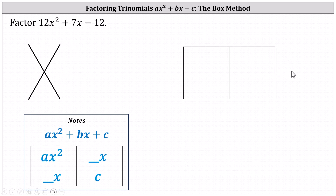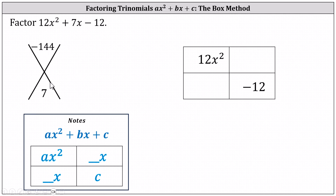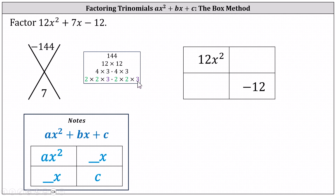Let's look at one more example. We want to factor 12x squared plus 7x minus 12. We first place 12x squared and negative 12 along the main diagonal. Now we determine the factors of a times c that add to b. a times c is 12 times negative 12, which is negative 144, and b is positive 7. To determine the factors of negative 144 that add to 7, let's look at the prime factorization of 144. Notice the prime factorization of 144 contains 4 factors of 2 and 2 factors of 3. Notice 2 times 2 times 2 times 2 is 16, and 3 times 3 is 9.